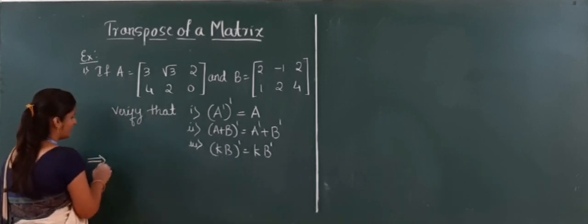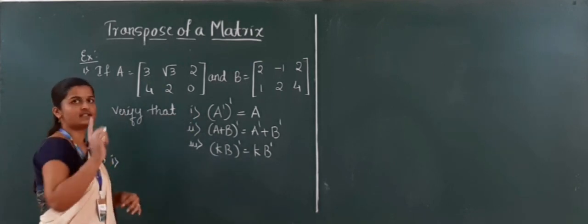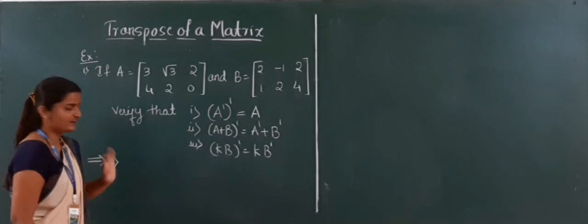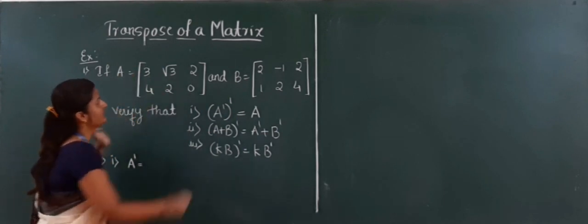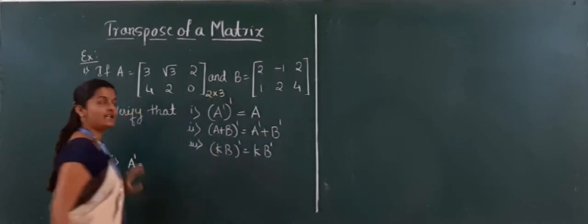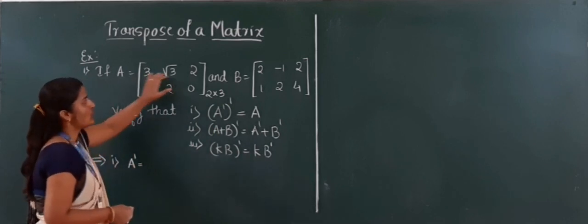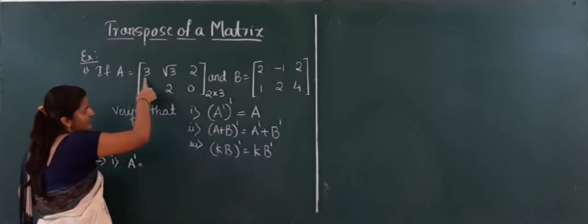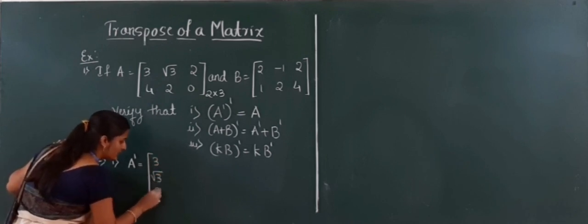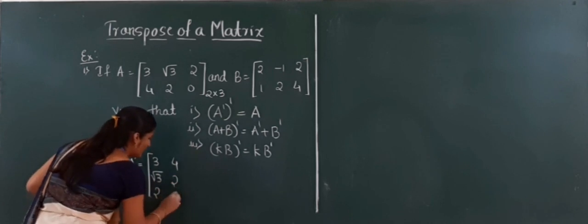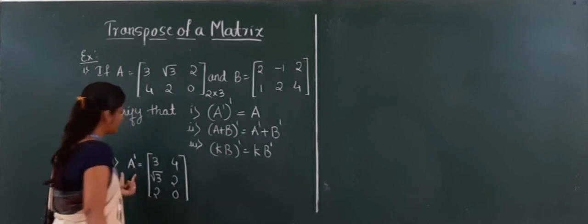Starting from the first: we must show (A')' = A. Matrix A has order 2 by 3. To write A dash, I write the rows as columns. First row is 3, root 3, 2 — written as a column. Second row is 4, 2, 0 — written as a second column. This is our A dash, of order 3 by 2.